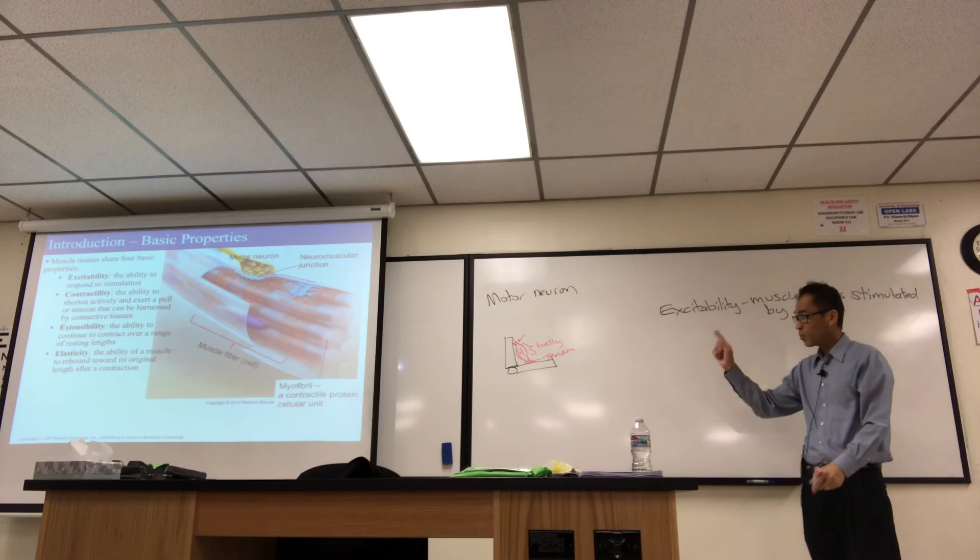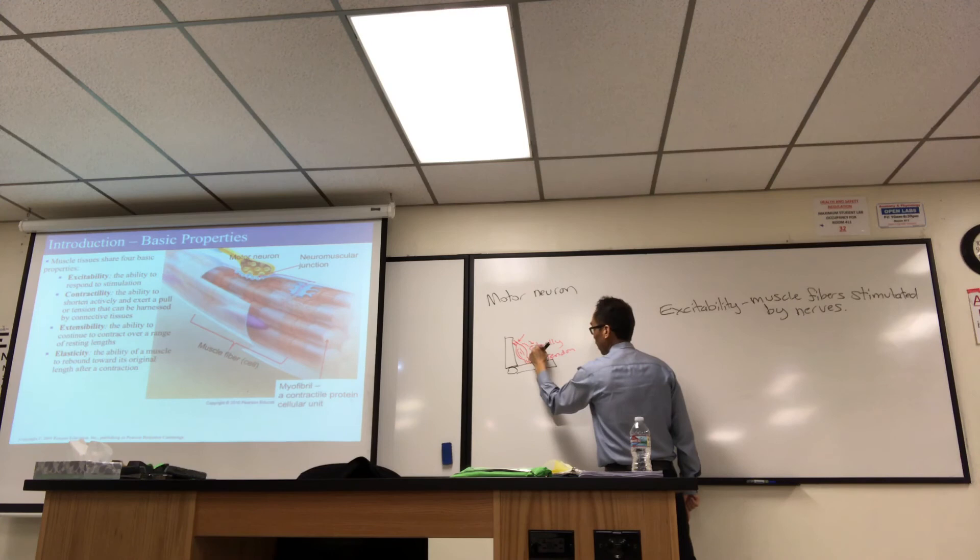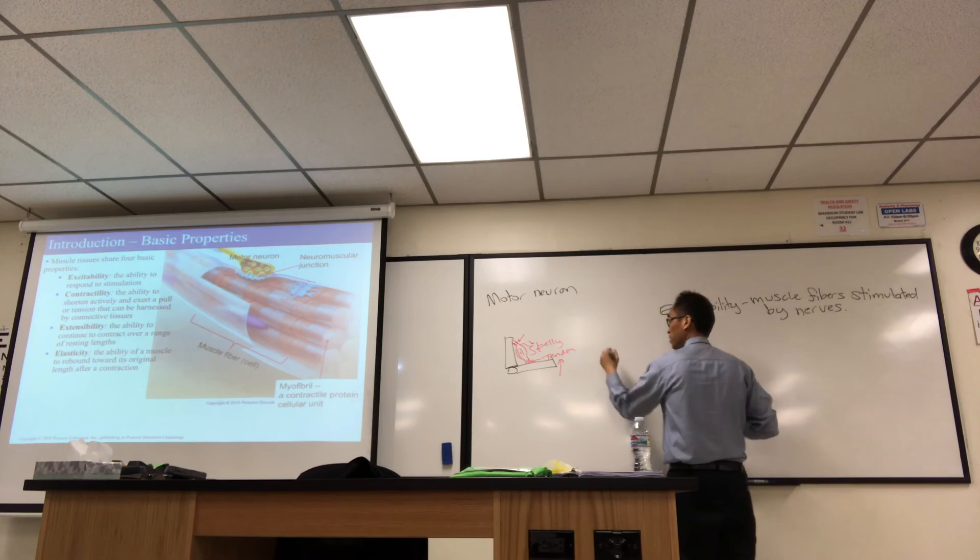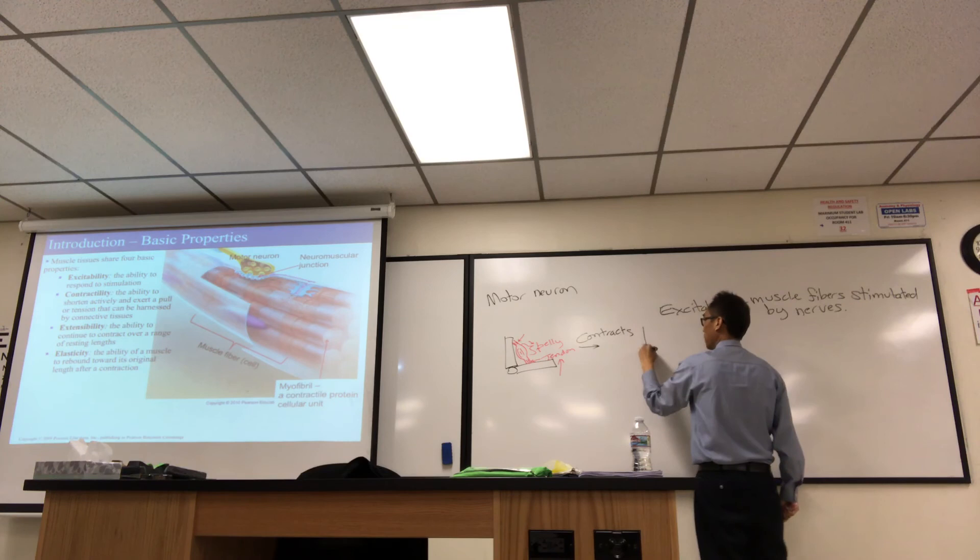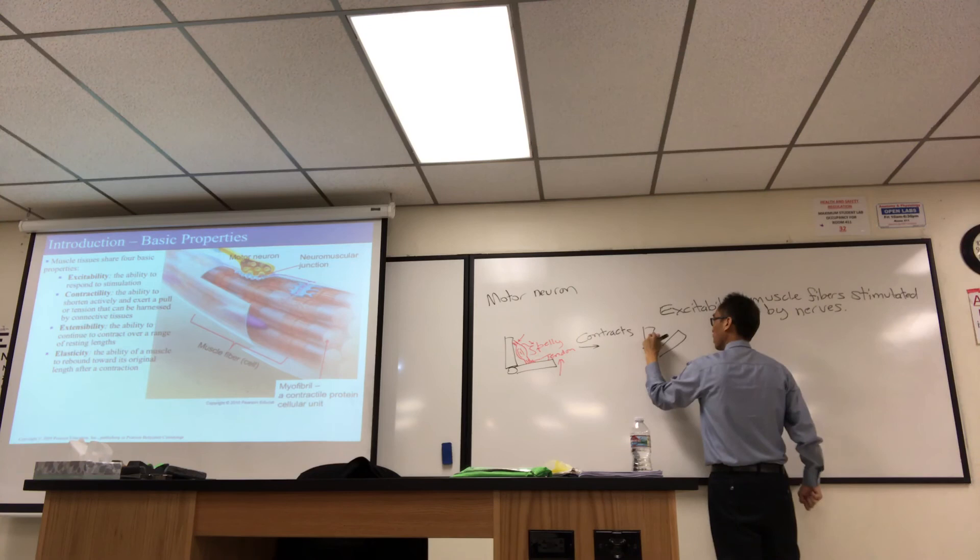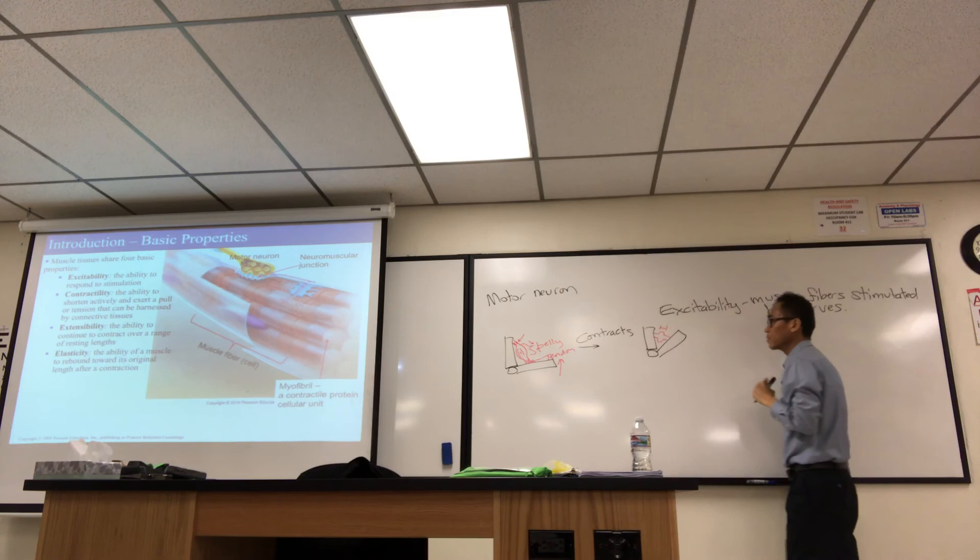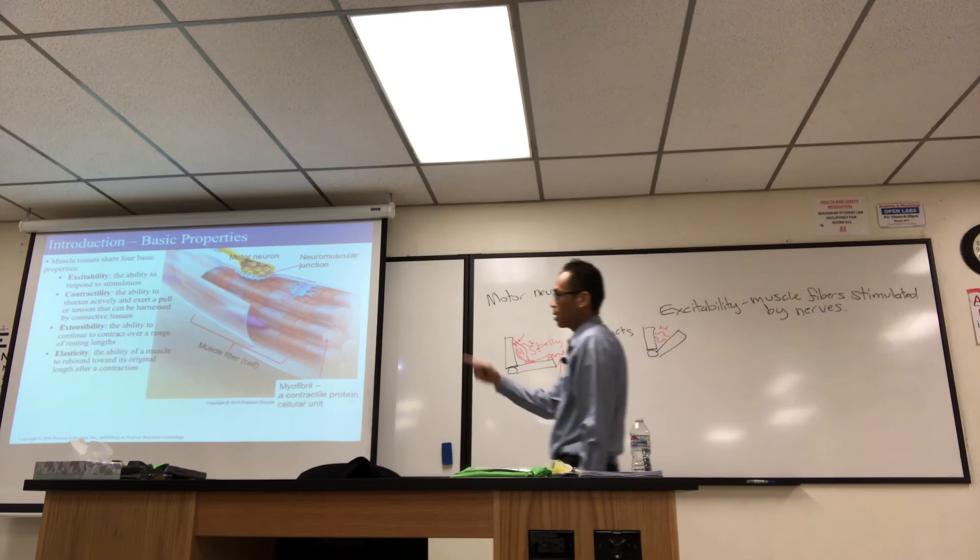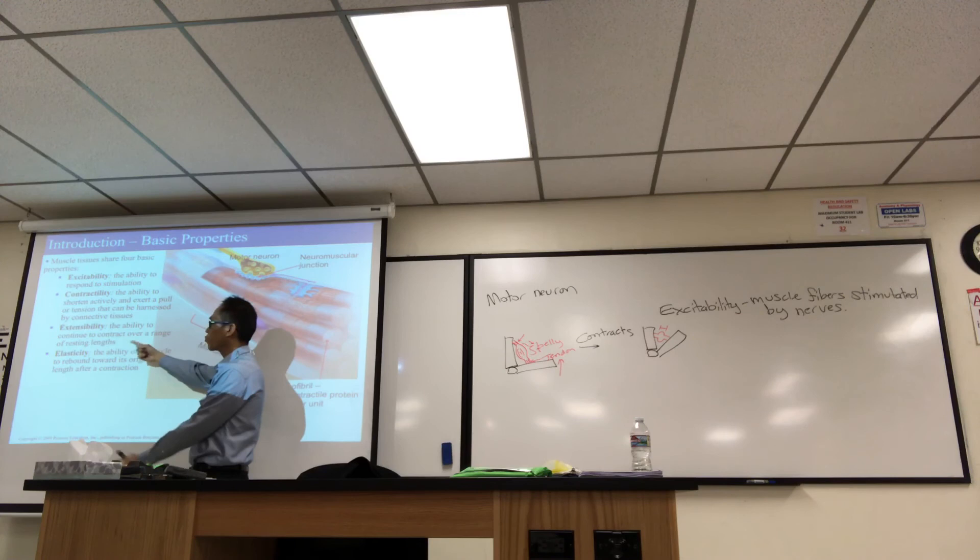And so when it does, the muscle contracts. So it pulls in from there and there. And in this example, I'm only going to move this bottom bone. It's going to swing up. This top bone, vertical bone, will remain stationary in my example. Maybe it looks like this after it contracts. So I'm going to kind of exaggerate here. See the length of the muscle? It got shorter. That's contraction. And the joint moved. It flexed. So that's what's meant by contractility.